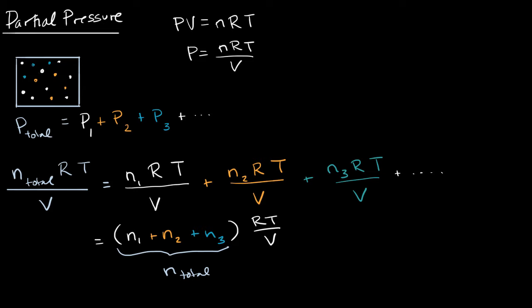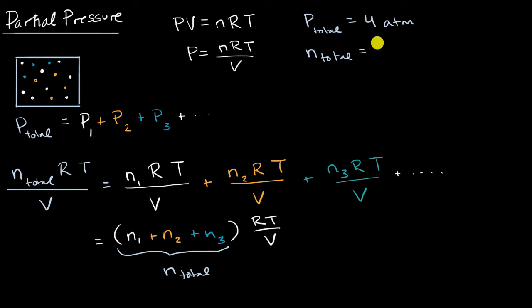We can use these mathematical ideas to answer other questions and come up with other ways of thinking about it. For example, let's say we know that the total pressure in our container due to all of the gases is four atmospheres, the total number of moles in the container is eight moles, and the number of moles of gas three is two moles. Can we use this information to figure out what the partial pressure due to gas three is going to be? Pause this video and try to think about that.